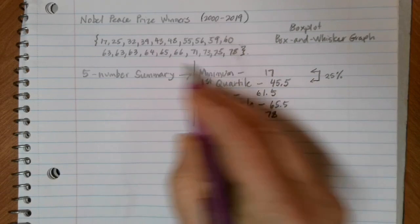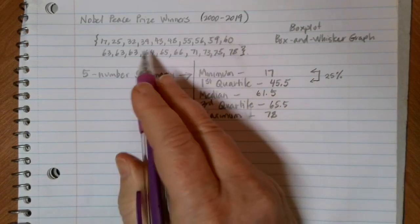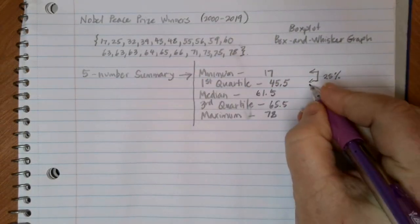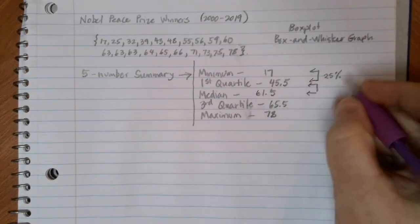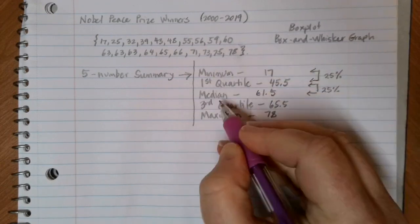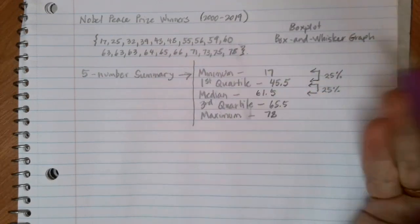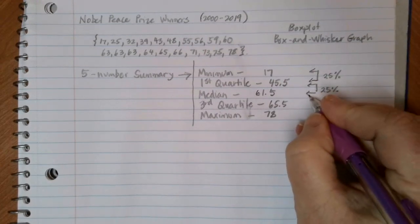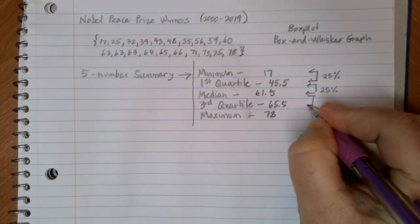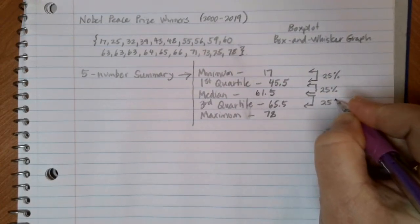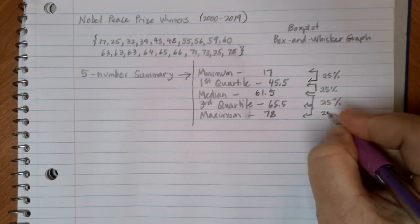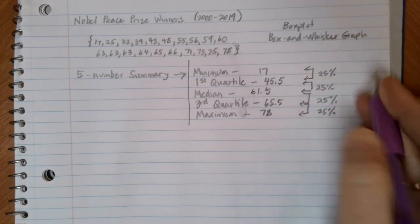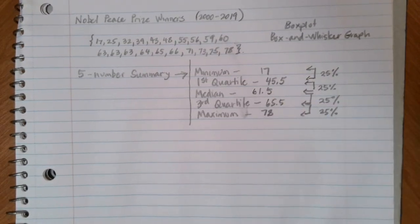25% of the data points from our list, so the bottom five numbers, are going to lie in this range. 25% are going to lie between the first quartile and the median, so the next five numbers in our list. The next 25% of the data would lie here, and then the last 25% of the data would lie in between these values here. So we're using these five numbers to break our graph up into these four sections.